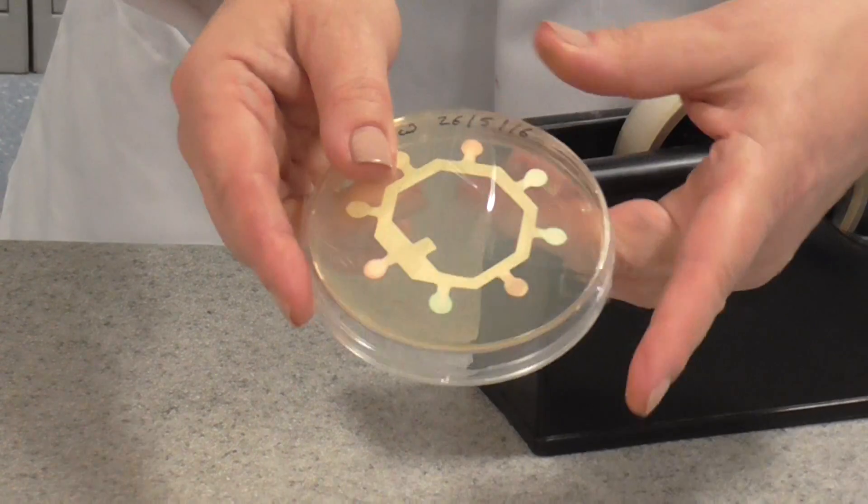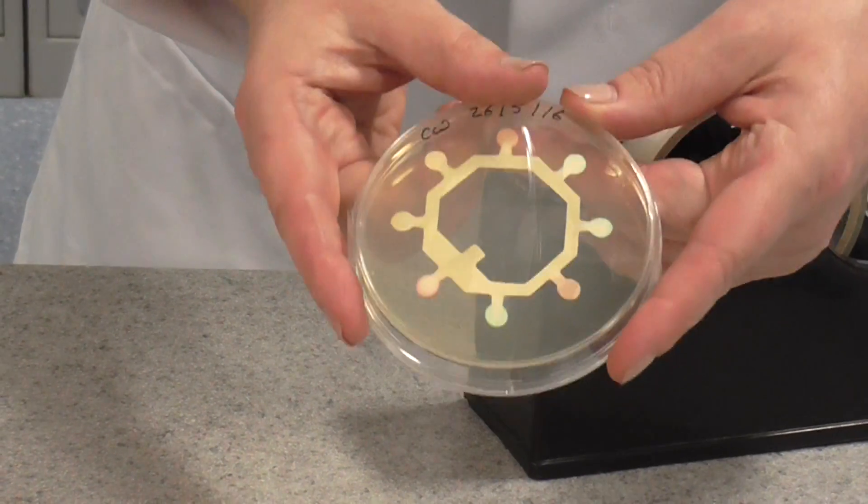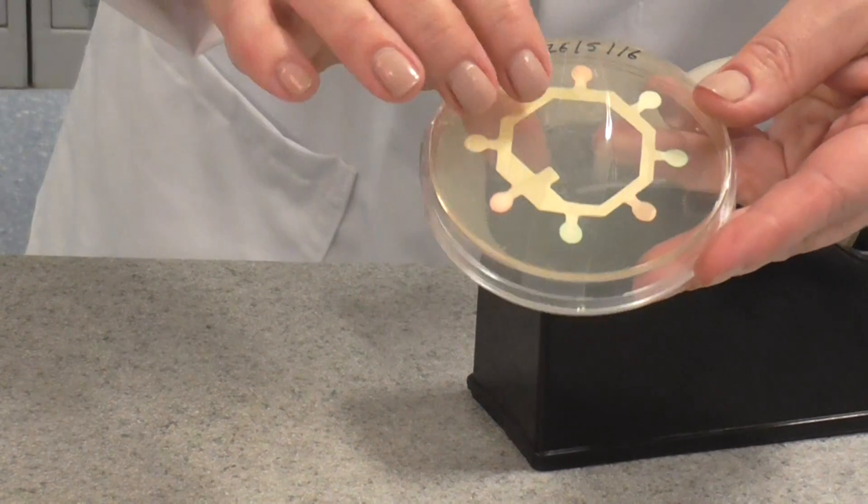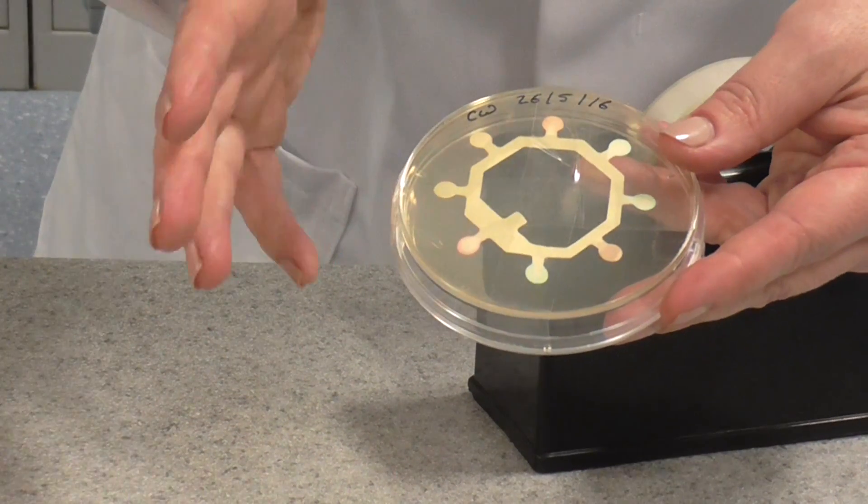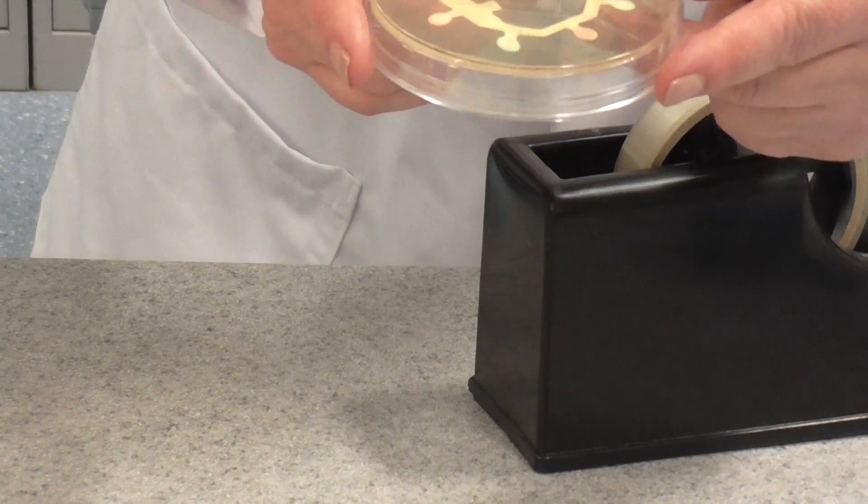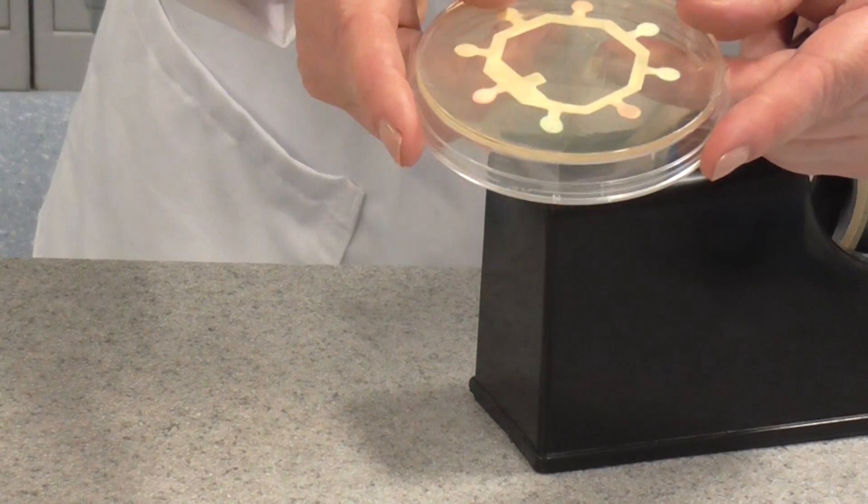This should be placed in an incubator at 20 degrees C in the school lab because we don't want to encourage the growth of pathogens. So temperatures around 37 degrees are not allowed. 20 degrees C for about 48 hours and you should be able to see the results.